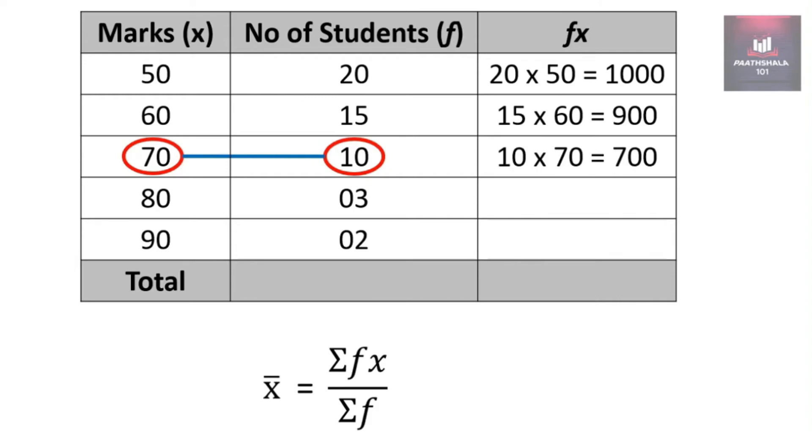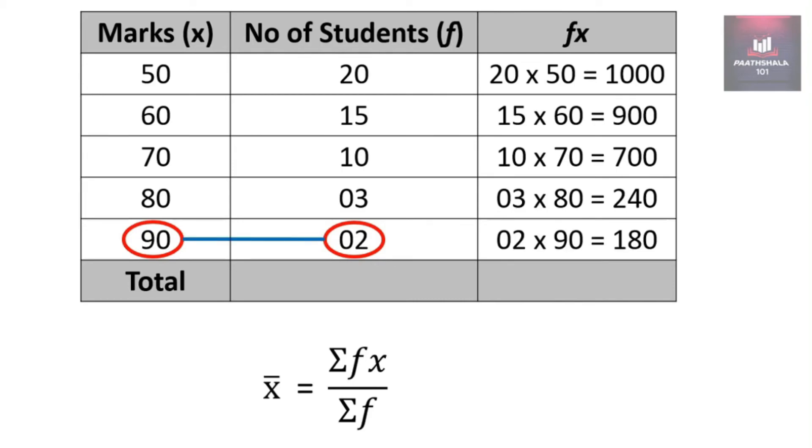For the next row it will be 3 and 80, so 3 into 80 is 240. For the next row 2 and 90, so 2 into 90 is 180.